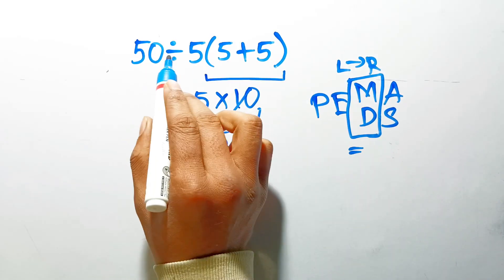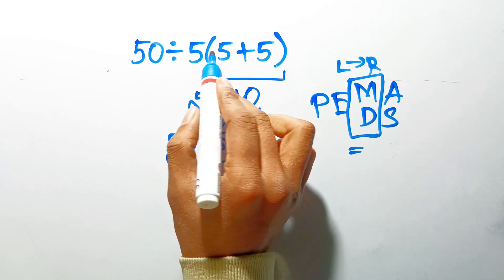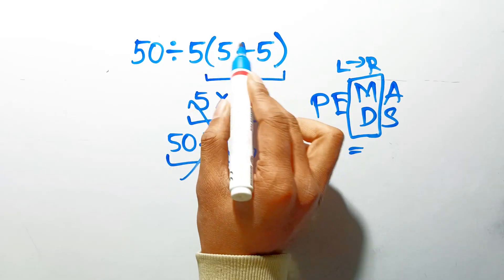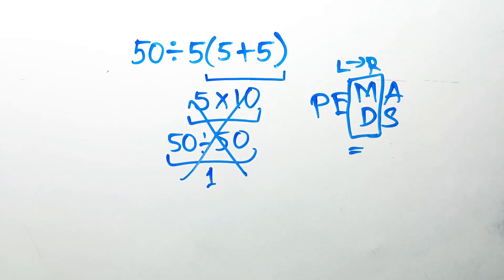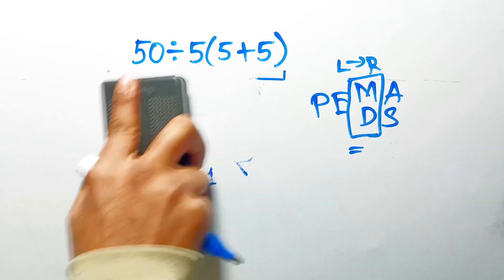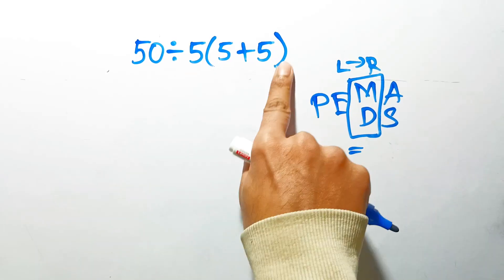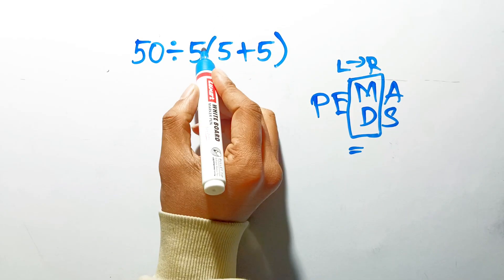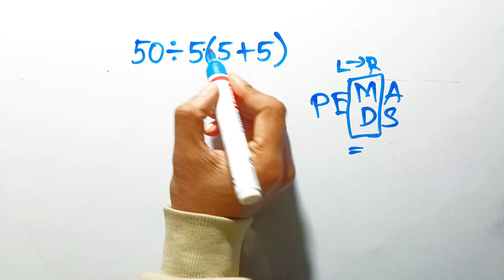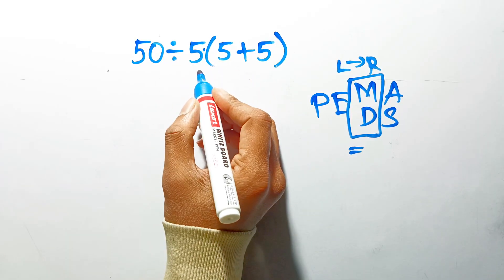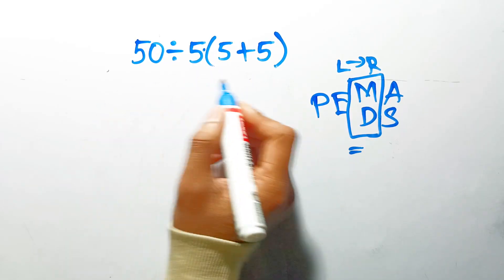In this expression, we have one division, one multiplication, and one parentheses. Inside this parentheses, we have one addition. Here we have a multiplication, because in mathematics, when a number is placed next to parentheses, it means multiplication, and we usually don't write the multiplication sign for brevity.